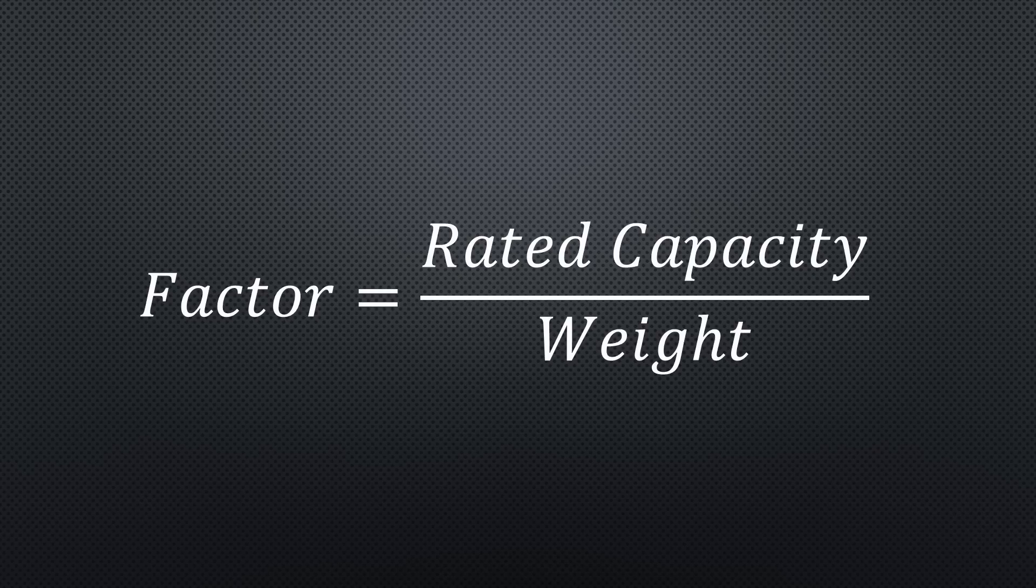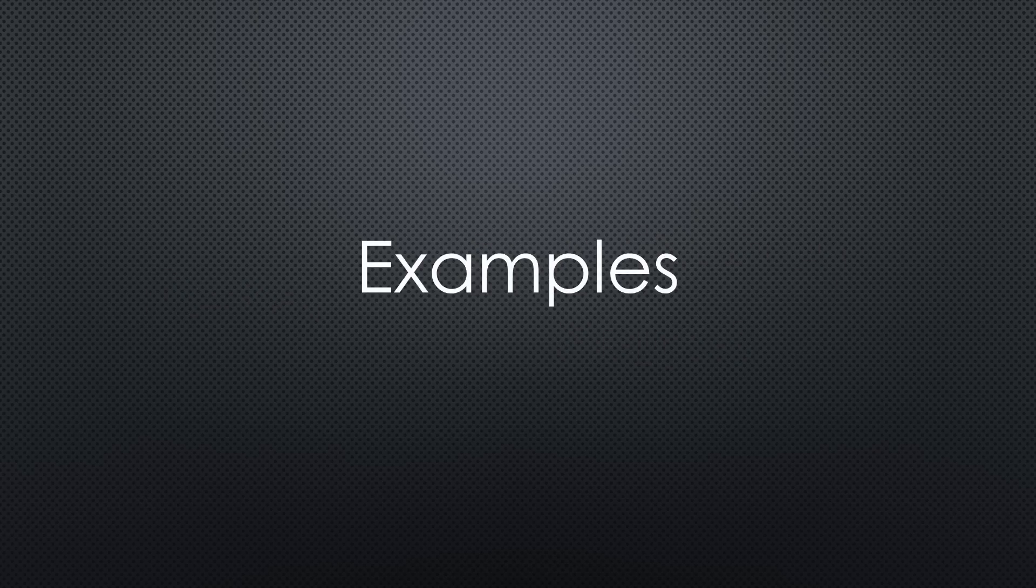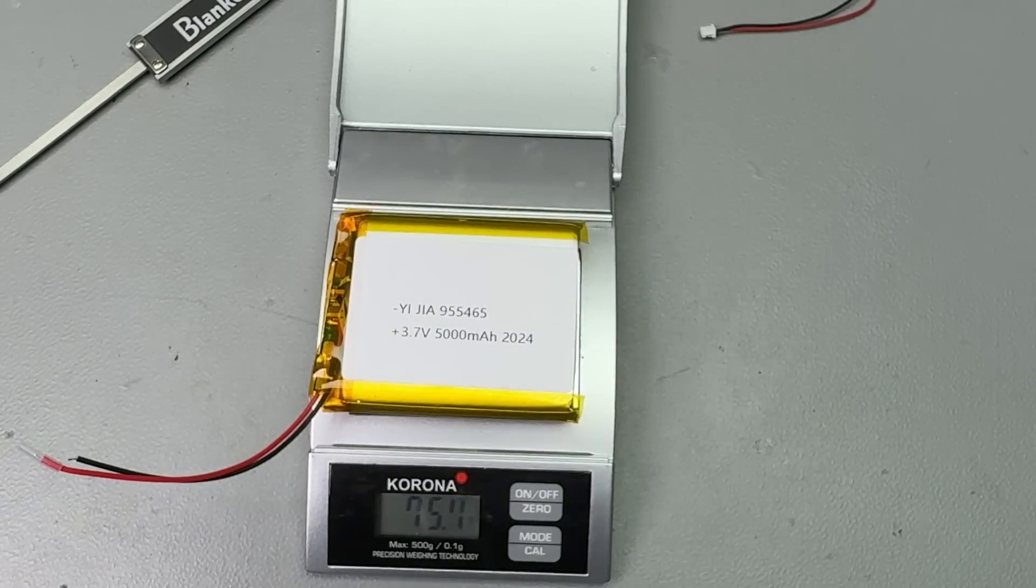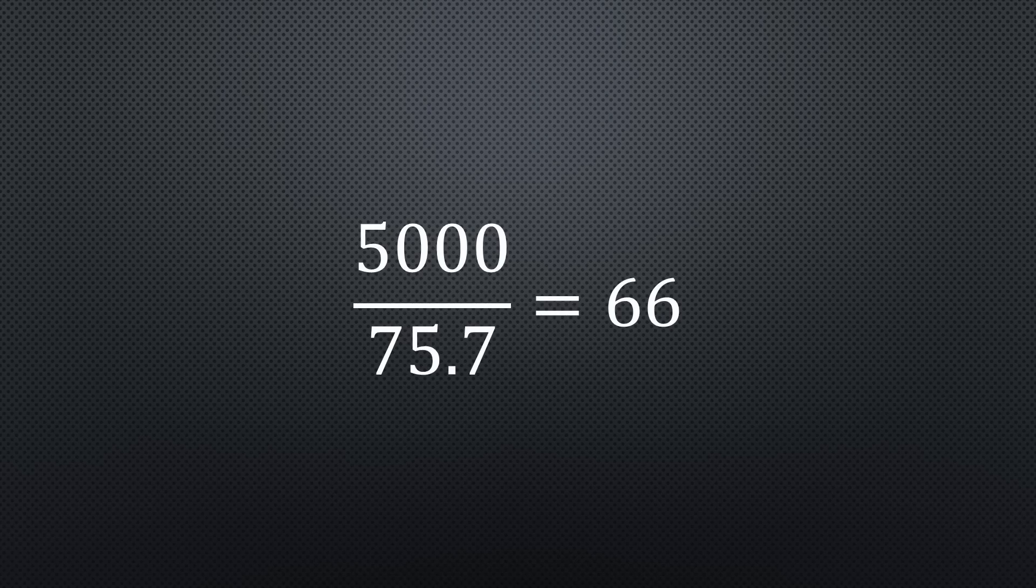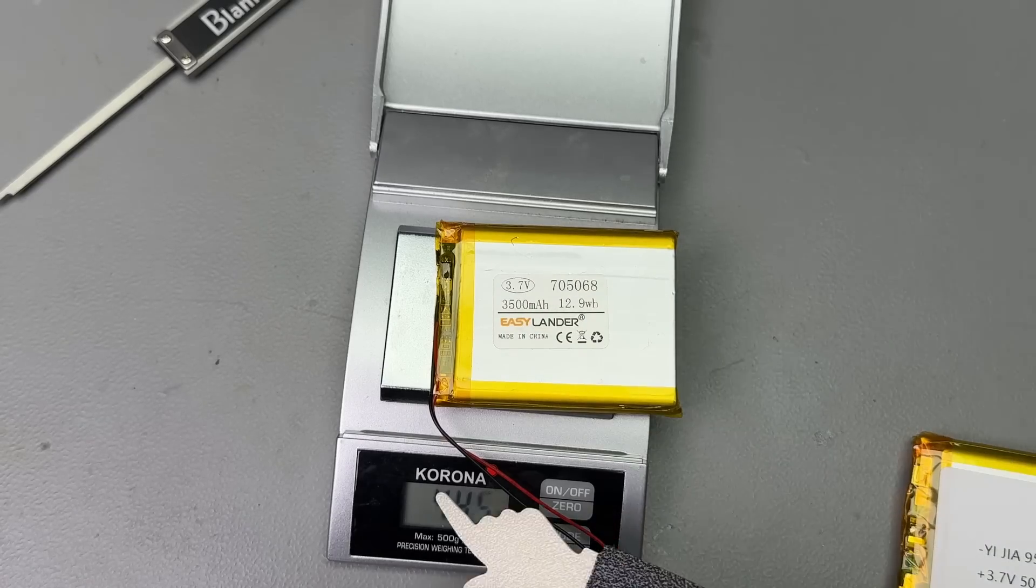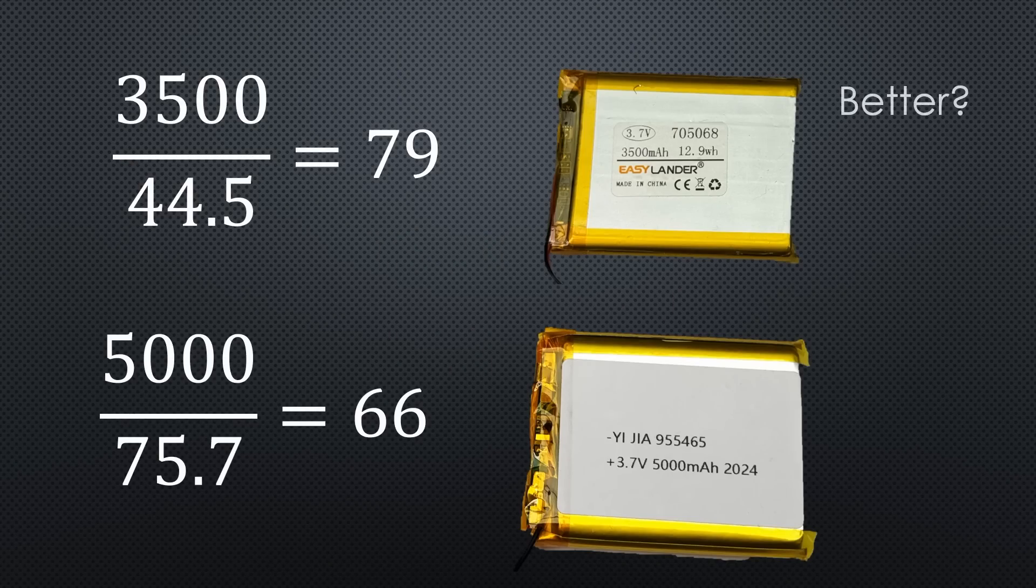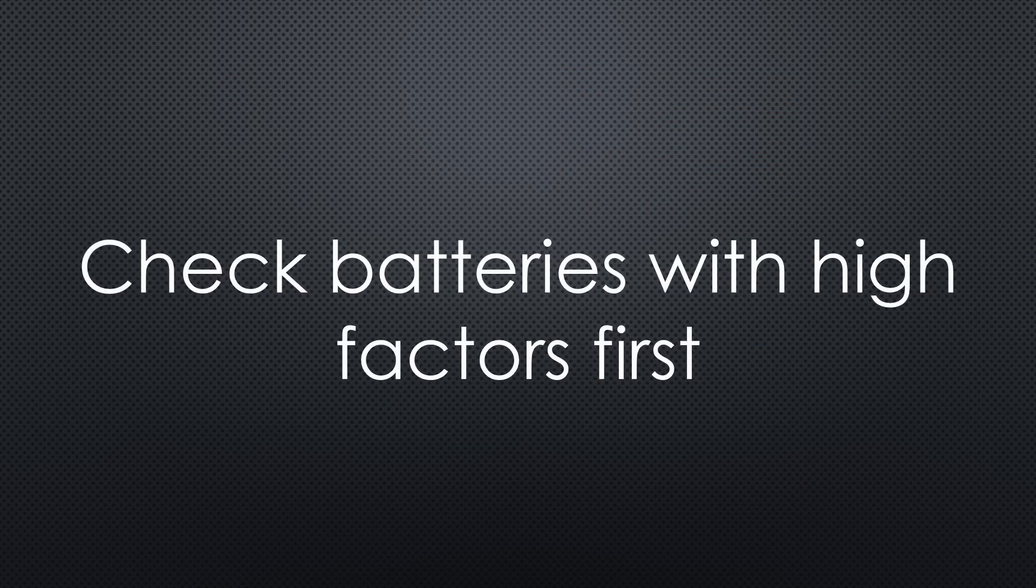Fake batteries are often significantly lighter or smaller than their proper counterparts. A first comparison can be done by dividing the capacity by the weight. A 5000 mAh battery weighs 76 grams, its factor is 66. A 3500 mAh battery weighs 44 grams, so its factor is 79. Higher factors typically indicate better batteries, but could also signal fakes. If you find a battery with a suspiciously high factor, measure its capacity right after arrival and start a dispute if something is not correct.